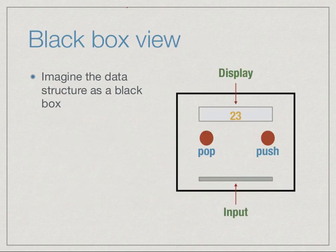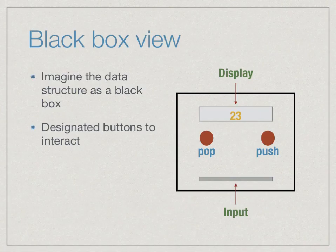A good way to think of an abstract data type is as a black box, which allows limited interaction. Imagine something like an ATM machine. We have the data structure as a black box and we have certain buttons, which are the public interface, the functions that we are allowed to use. In this picture, imagine this is a stack and the buttons we are allowed to push are pop and push.